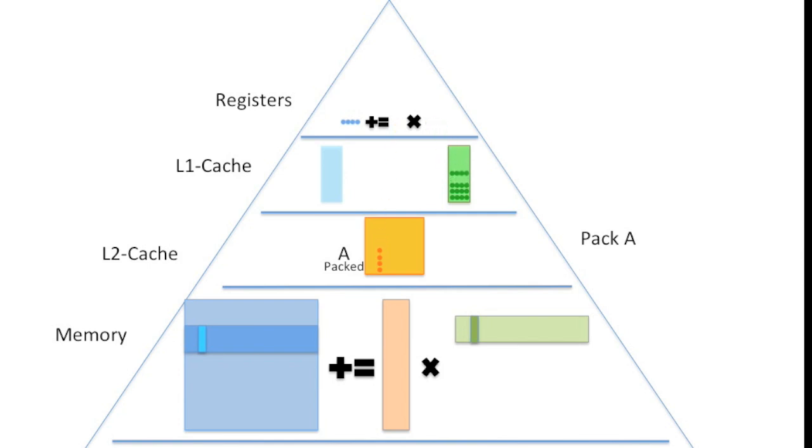every time we bring in an element of A out of the L2 cache, we do eight floating point operations, four multiplies and four adds to update four elements of C.